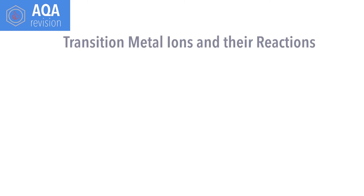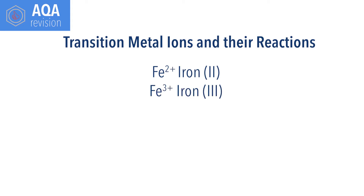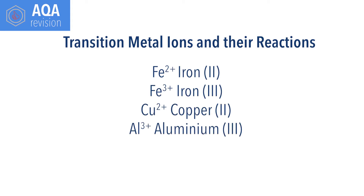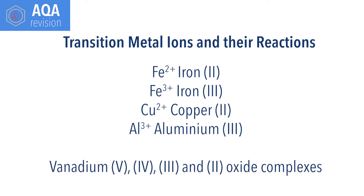Hello, in this video we're going to look at colour changes for the reactions of transition metal ions in aqueous solution and their precipitates, as required for AQA A-level chemistry. The specific ions covered will include Fe²⁺, Fe³⁺, Cu²⁺, and Al³⁺, as well as the colours for vanadium +5, +4, +3, and +2 oxide complexes.